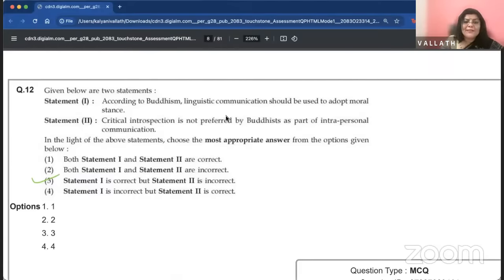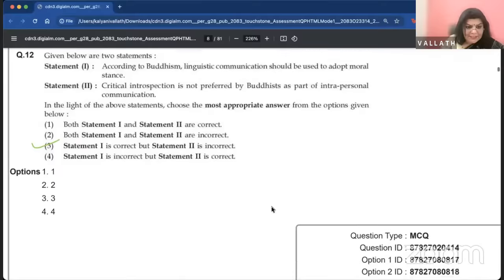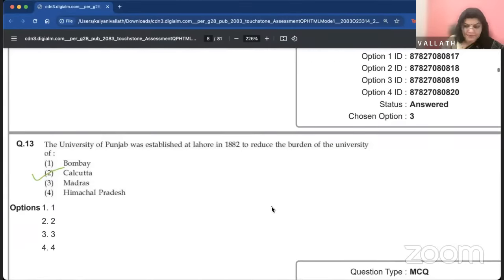A train moving at a speed of 63 kilometers per hour enters a railway station and crosses the platform in 20 seconds. If the length of the train is 100 meters, what is the length of the platform? This is a typical question that they always ask. It is 250 meters.